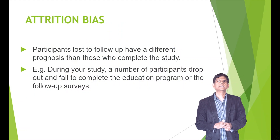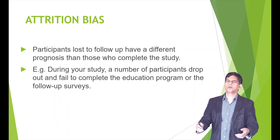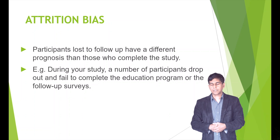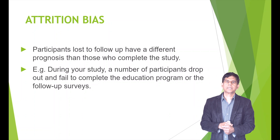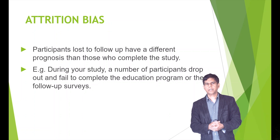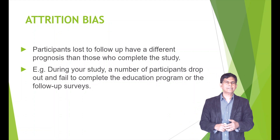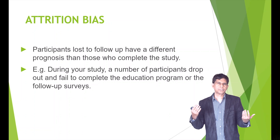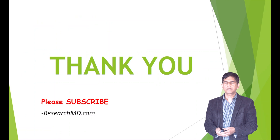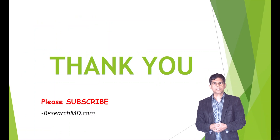Finally, attrition bias occurs when participants lost to follow-up have a different prognosis than those who completed the study. For example, if a number of participants drop out and fail to complete an educational program or follow-up survey, this introduces attrition bias. You may be able to correct for this using an intention-to-treat analysis. Thank you so much for watching — we'll be back with another presentation soon.